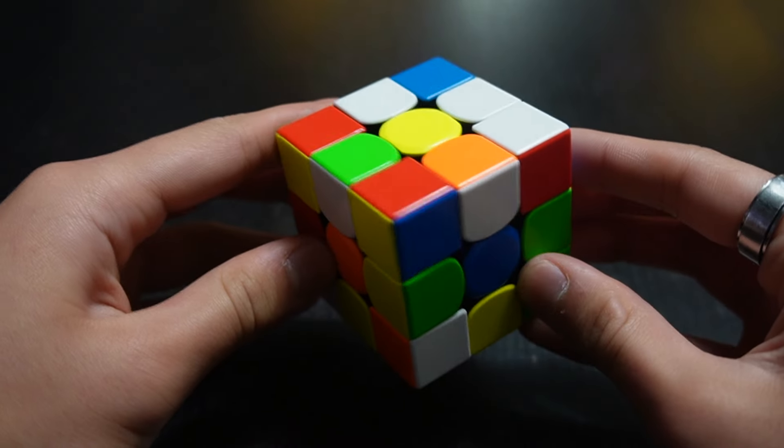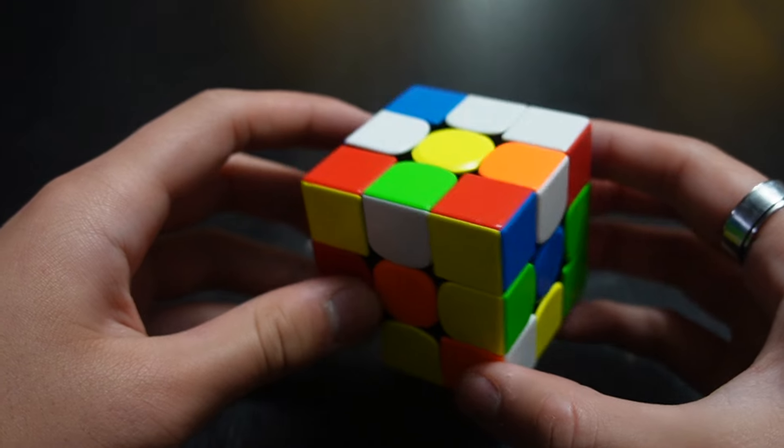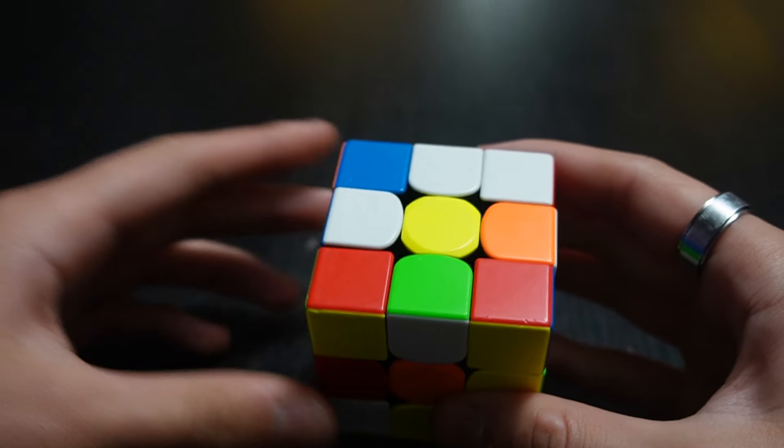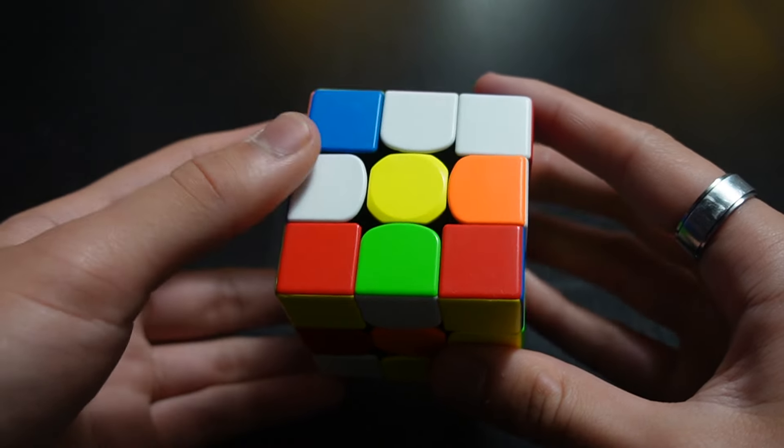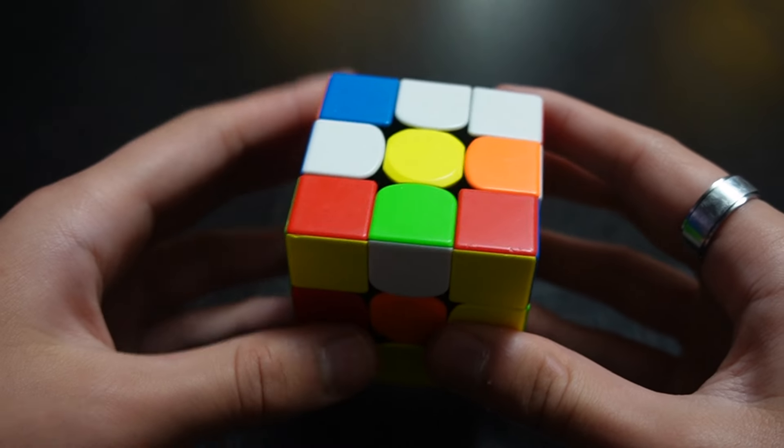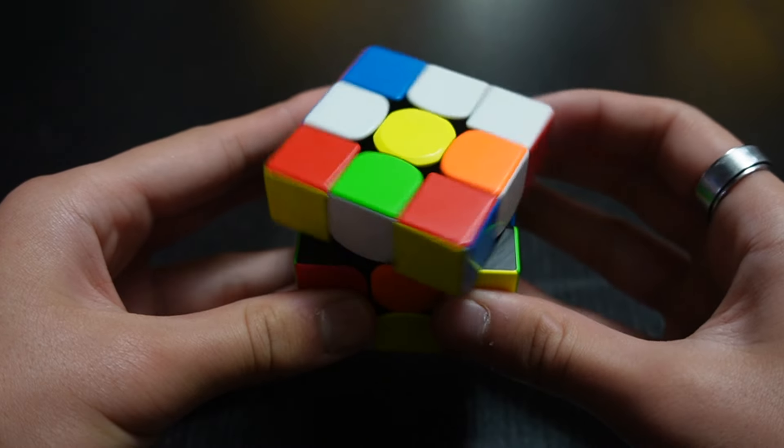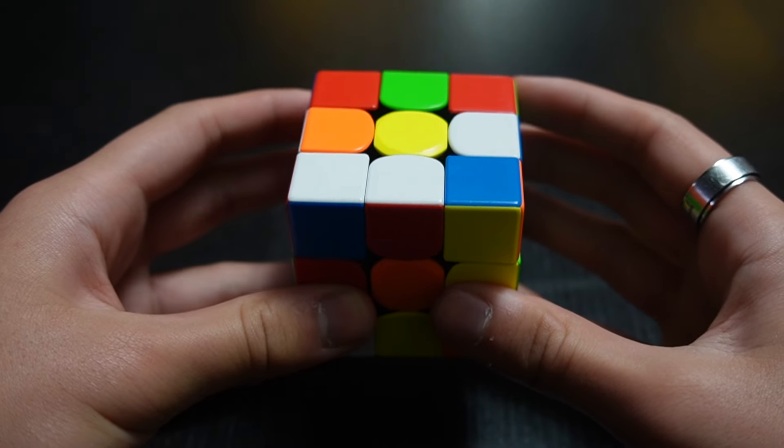Now, what if I said U2, what does that mean? Well, if you think back, U means turn it clockwise, and the 2 just means turn it twice. So U2 would be 1, 2, just like that.